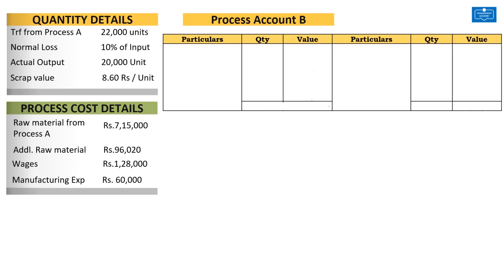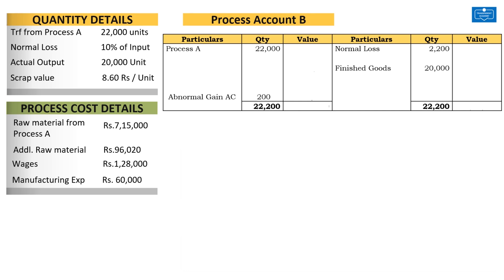Let us start by preparing the Process B account. Units introduced from Process A: 22,000 units. The normal loss for Process B is 10% of input, so normal loss is 10% of 22,000, that is 2,200 units. If we really lost 2,200 units, from 22,000 we reduce 2,200, and we would be able to transfer only 19,800 units. But in reality, the goods transferred to finished goods is 20,000 units. So the actual production is more than the normal production, which implies there is an abnormal gain of 200 units.